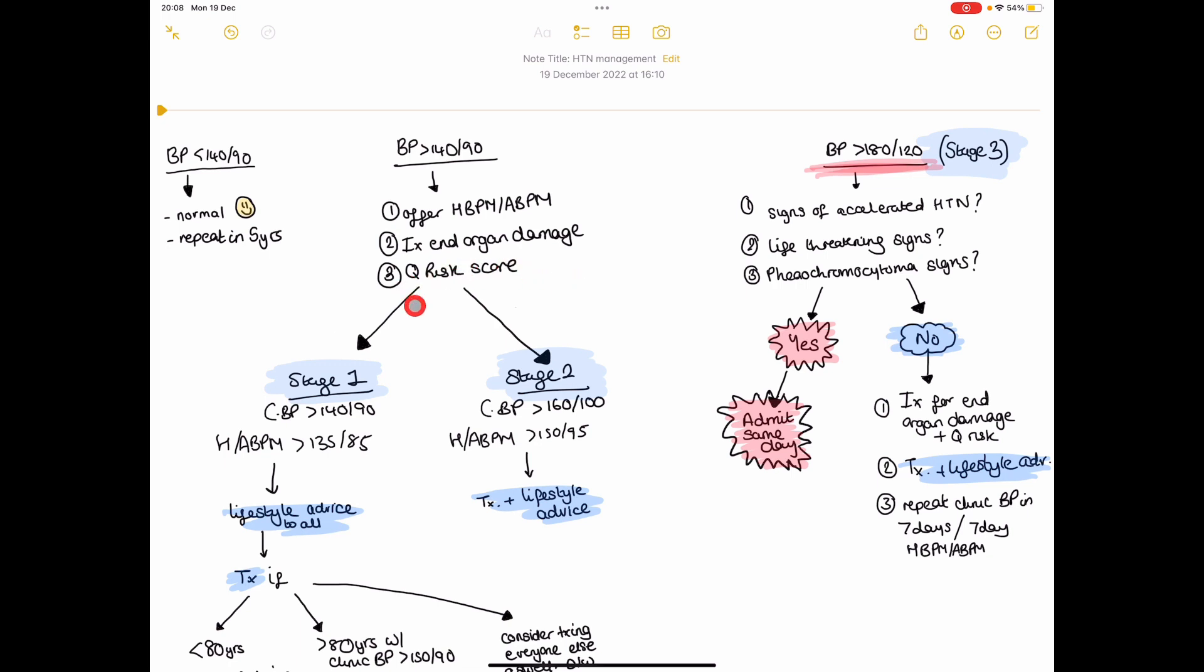At the same time we do a Q-risk score, so some of the parameters like the cholesterol levels when you do some of the blood tests, you can then input into the Q-risk calculator and get a risk score for what the patient's cardiovascular risk, the risk to have a cardiovascular event would be in the next 10 years.